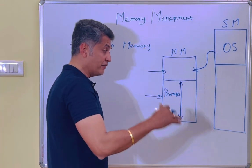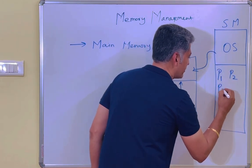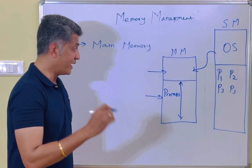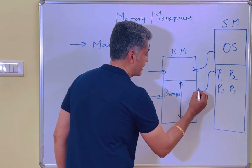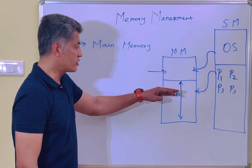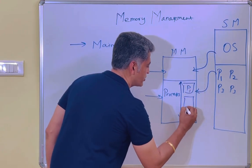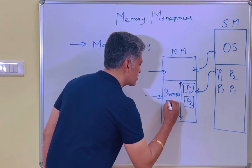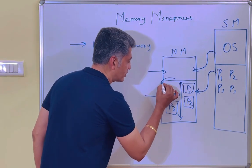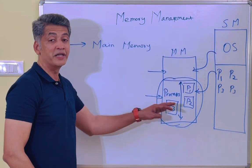Now you need to understand that your processes — a number of processes — will be available in the secondary memory. Whenever a process gets execution, the process will be moved from secondary memory to main memory. Based on this, some memory space will be allocated for process 1, then for process 2, then for process 3, and so on. So now we are going to discuss about this memory allocation for the process. This is called main memory management.